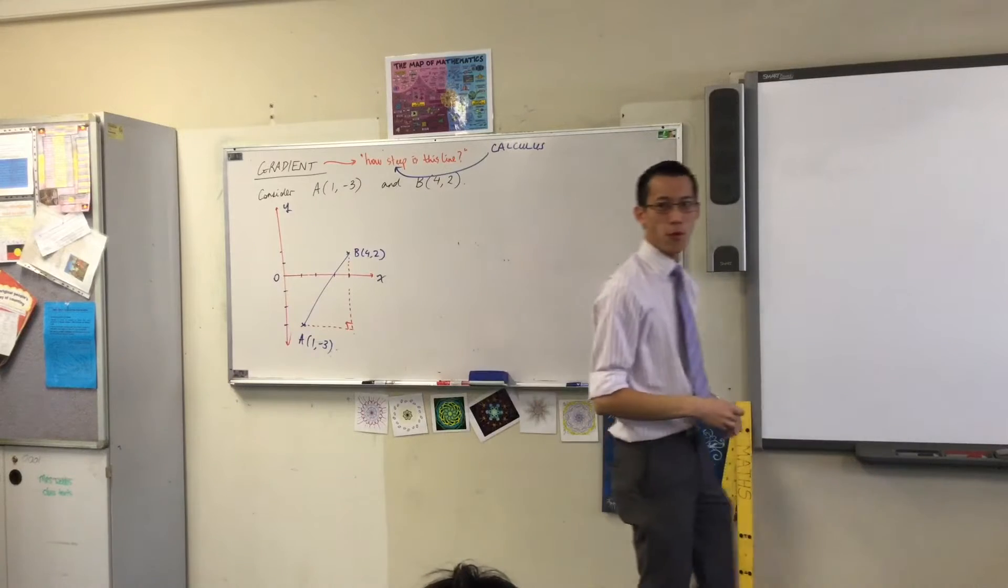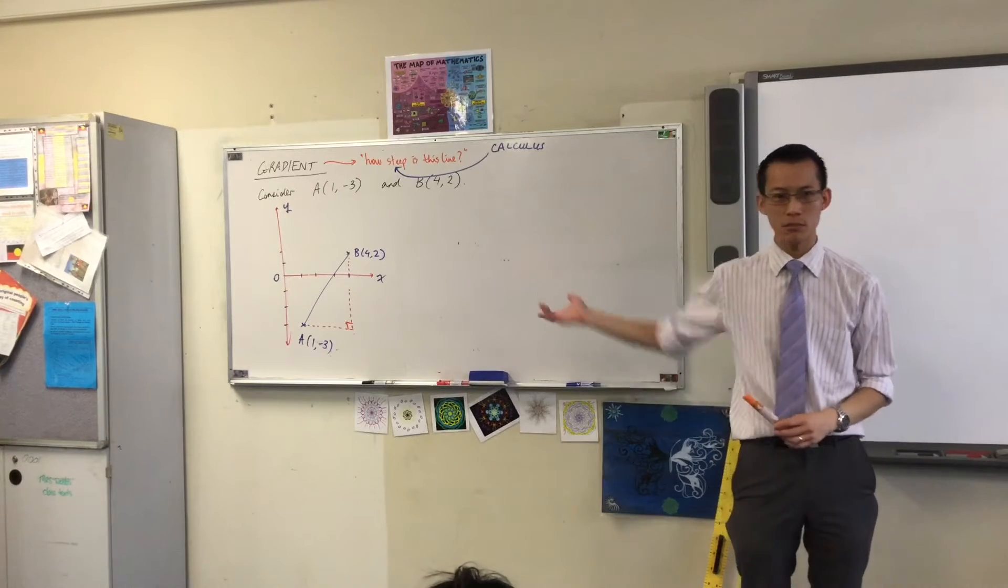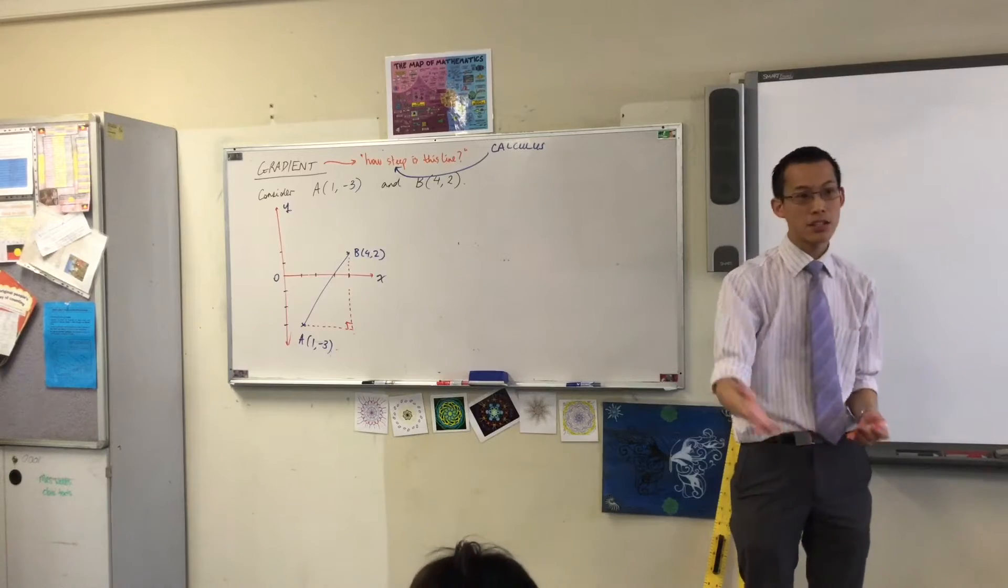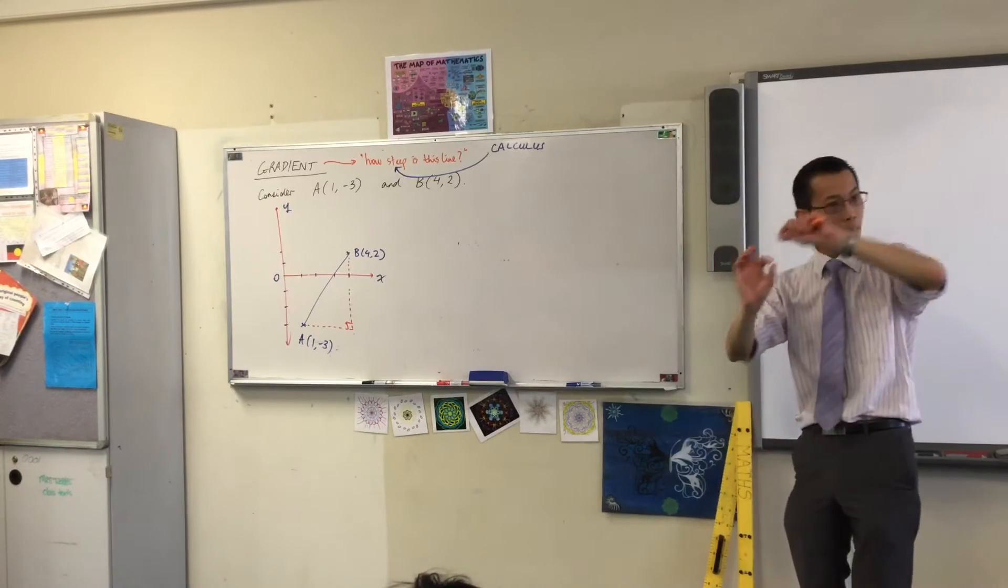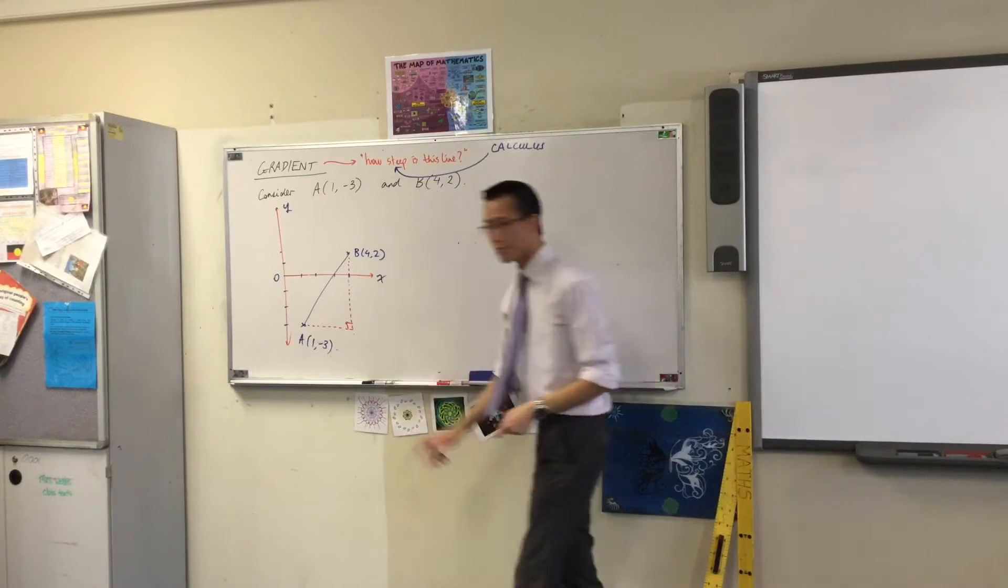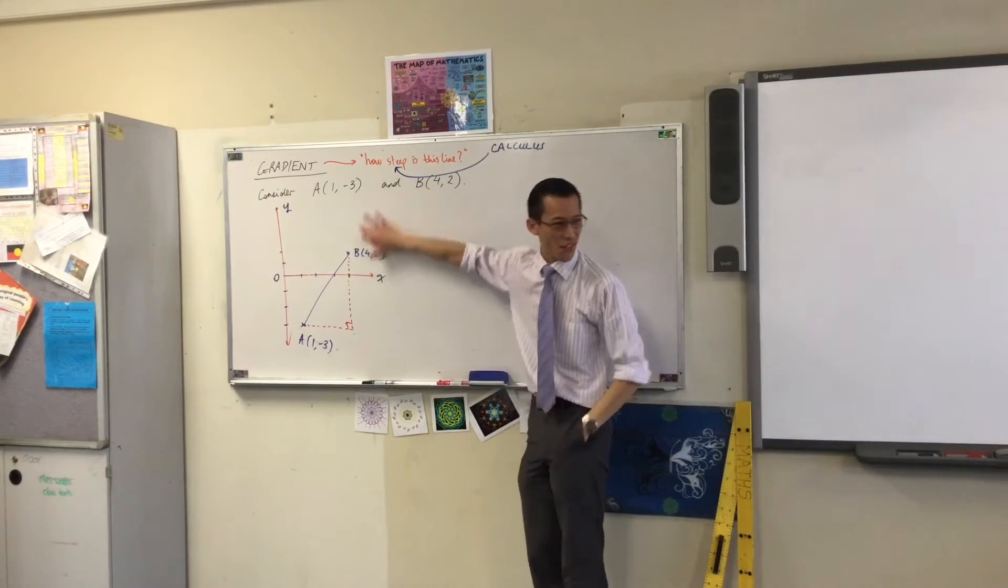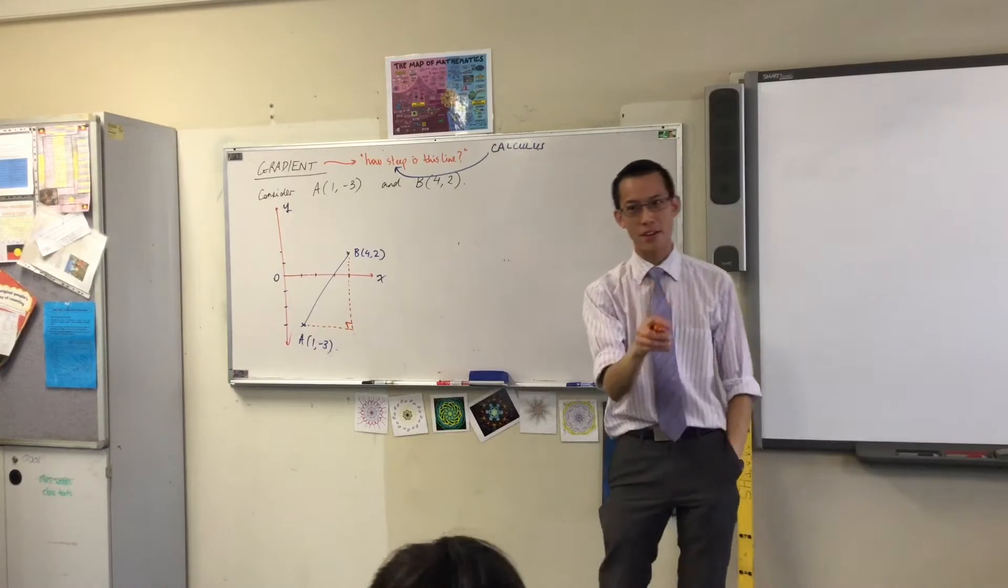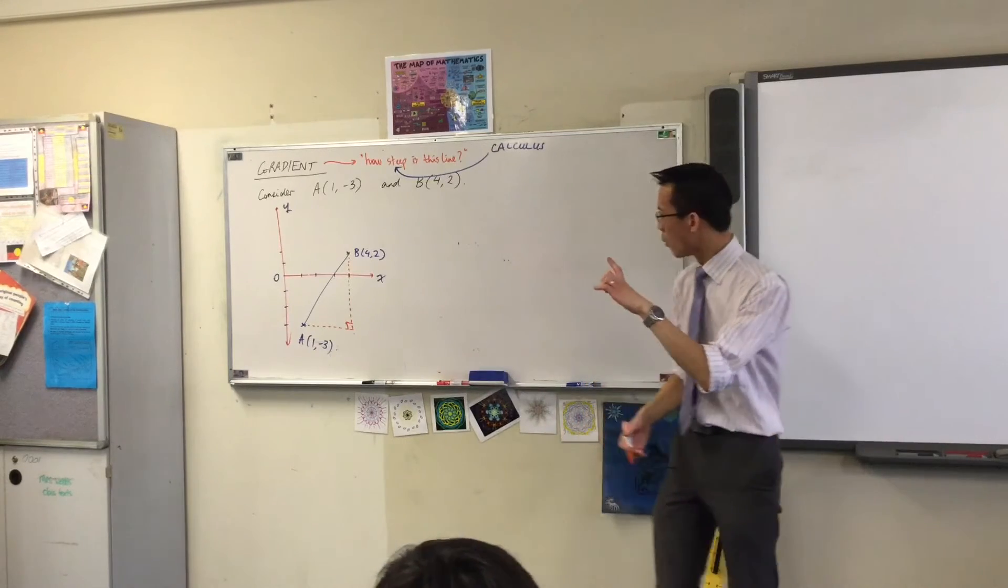Now, we used this before to calculate what were we doing with this right-angle triangle? Pythagoras. We were doing Pythagoras to work out the distance on that hypotenuse. Now, we know that this vertical distance, we put it into the Pythagoras formula to get that length. What was it?